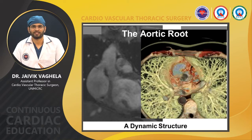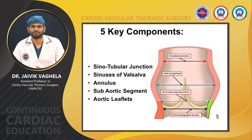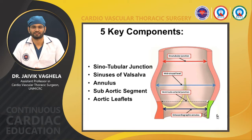What is the aortic root? The aortic root is mainly composed of five parts which include the sinotubular junction, sinus of Valsalva, annulus, sub-aortic segment, and aortic leaflet. We are going to learn a few basic things regarding each component and its surgical and physiological importance.